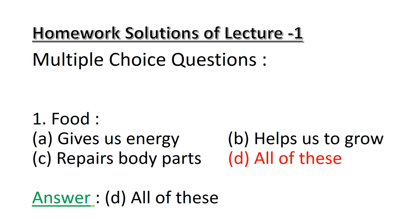Question number 1 was a multiple choice question in which it was asked what food does, and a few options were given to us. Option A: gives us energy. Option B: helps us to grow. Option C: repairs body parts. Option D: all of these.